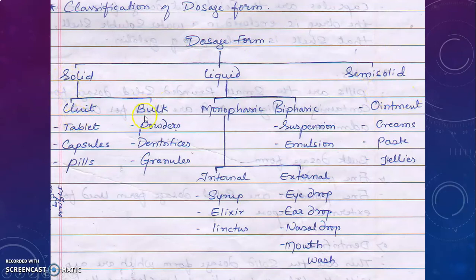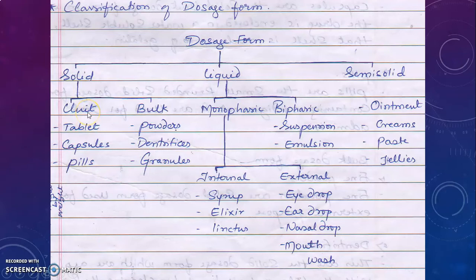Solid dosage forms include unit and bulk dosage forms. Unit dosage forms are those which are counted in numbers — tablet, capsule, pills. You can count one tablet, two tablets, one strip of tablets, two capsules. Bulk dosage forms include powders, dentrifices, and granules, which exist in bulk form and cannot be counted individually.